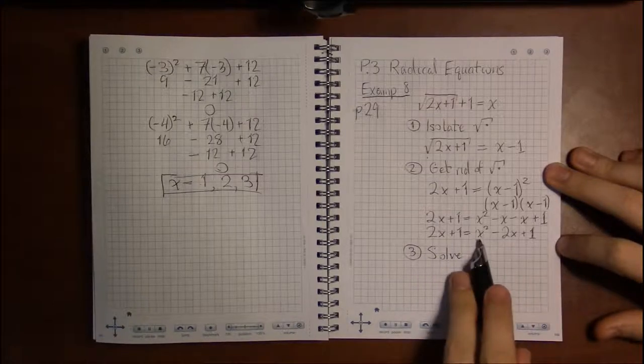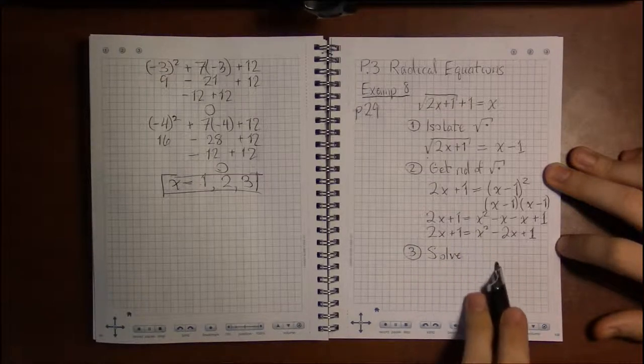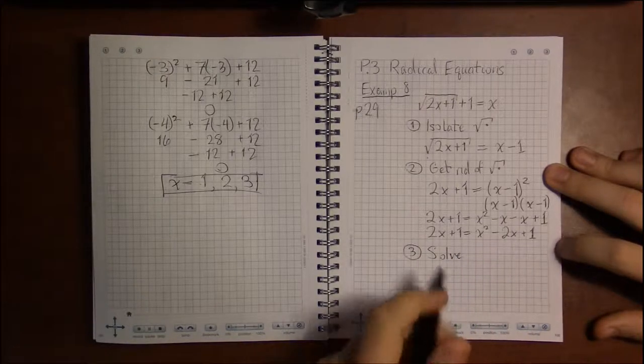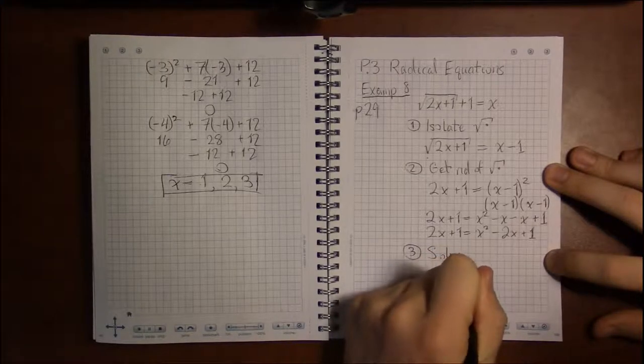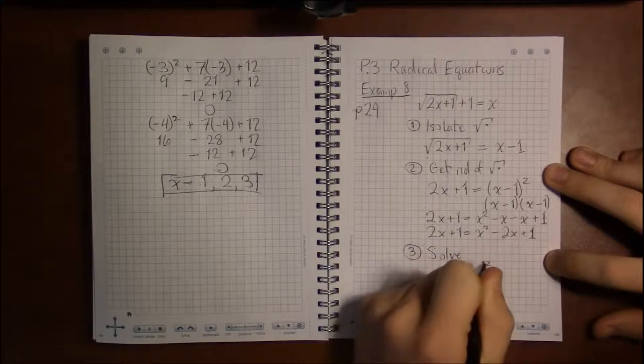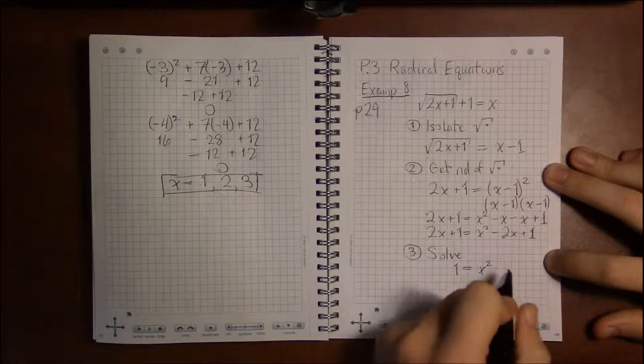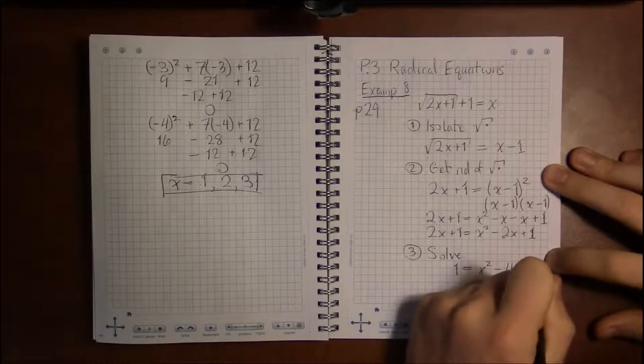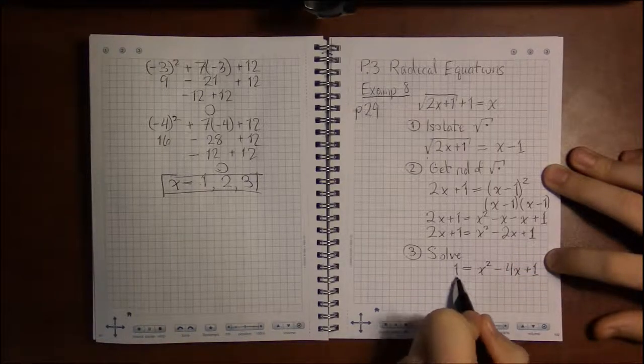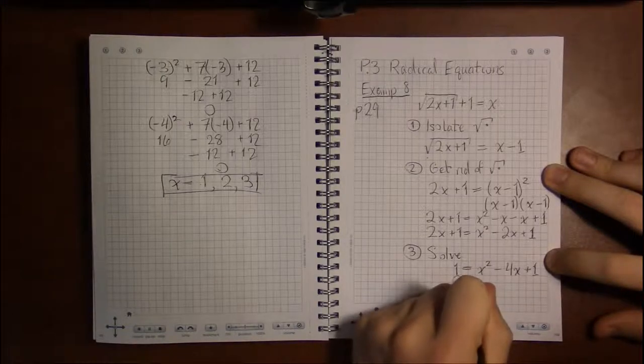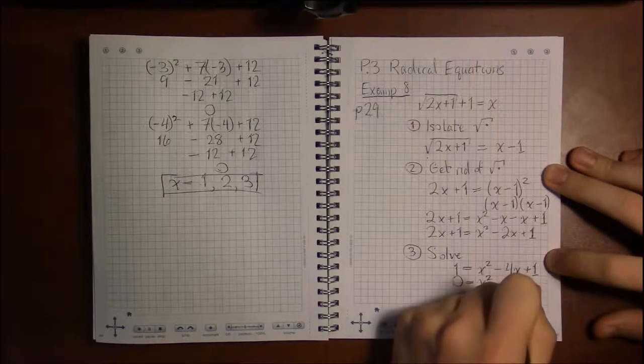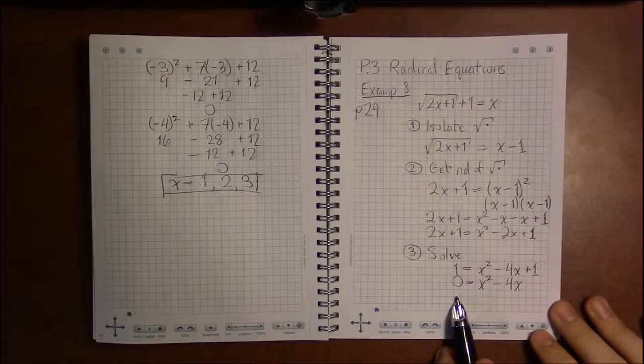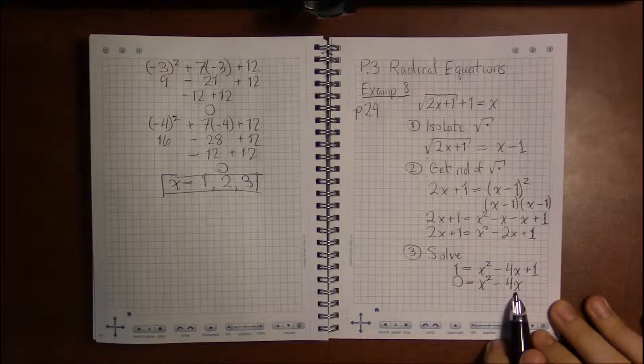So I'm going to get everything on one side. I like my x squared term to be positive, no negatives in front. So I'm going to subtract 2x from both sides. So minus 2x minus another 2x will be minus 4x. Subtract 1 from both sides. And that will just leave us with 0 equals x squared minus 4x.